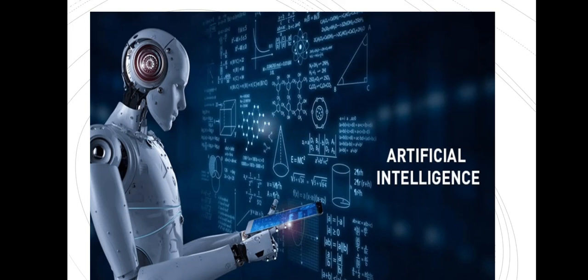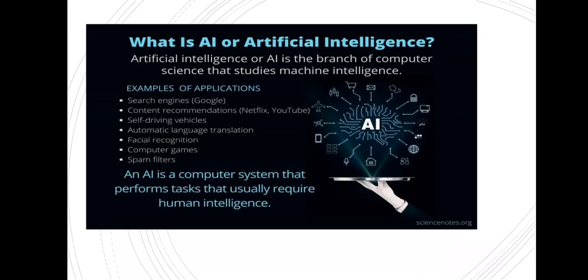Hello friend, welcome to the Nandos tutorial. Today I am going to discuss about artificial intelligence. Artificial intelligence is the intelligence and branch of computer science that studies machine intelligence. For example, search engines, content recommendation like Netflix and YouTube.